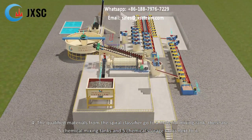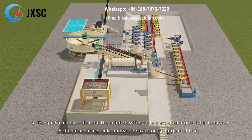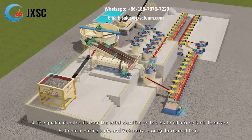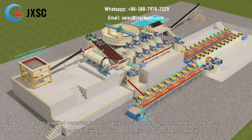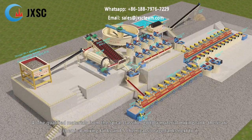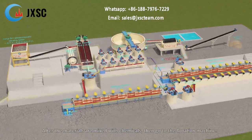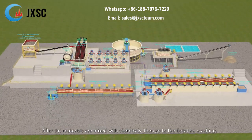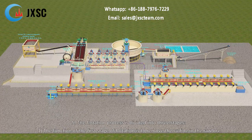The qualified materials from the spiral classifier go to a material mixing tank. There are 5 chemical mixing tanks and 5 chemical storage tanks next to it. After the materials are mixed with chemicals, they then go to the flotation machine.